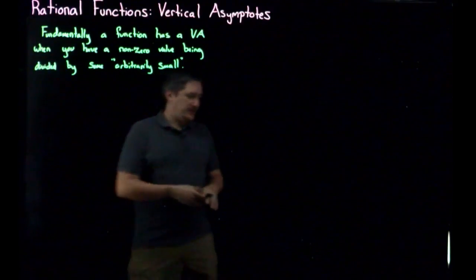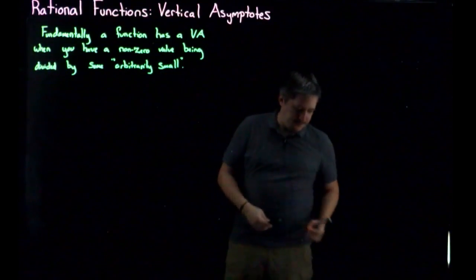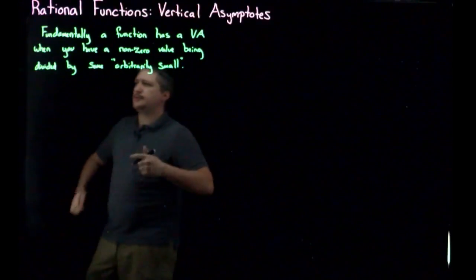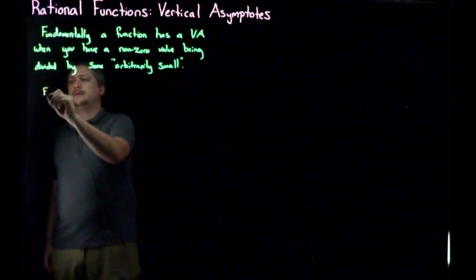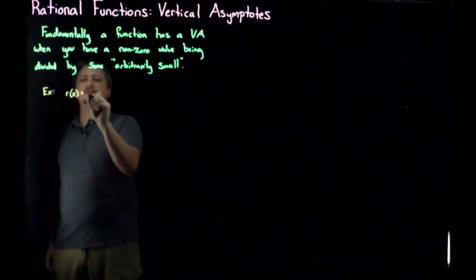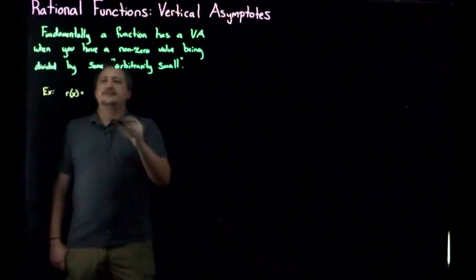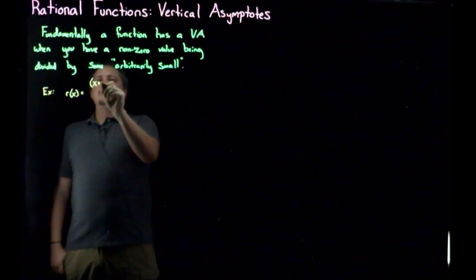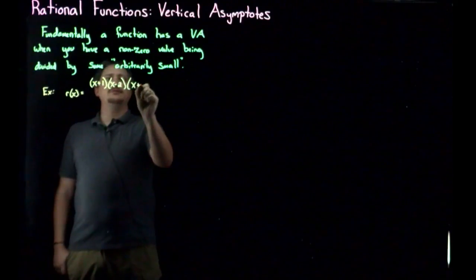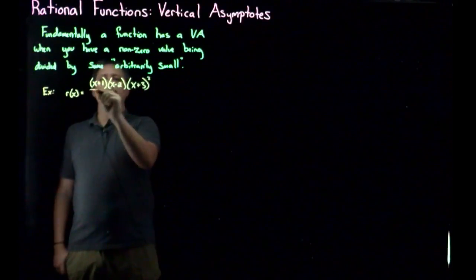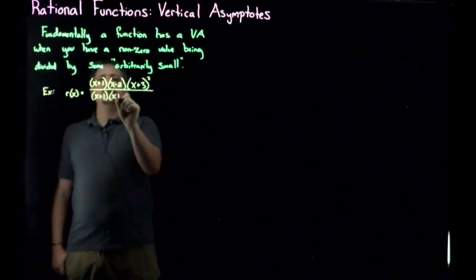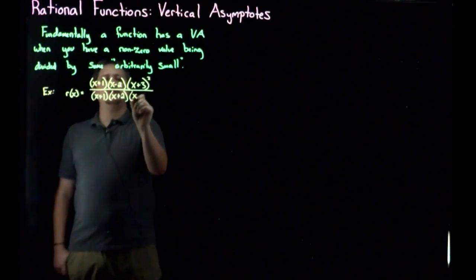So let's look at an example, and I'll explain what we mean here. So for example, let's look at the function r of x. And let's say this thing is (x+1)(x-2)(x+3)² over (x+1)(x+2)(x+3).